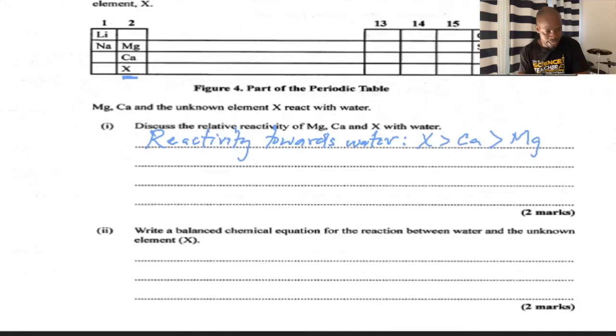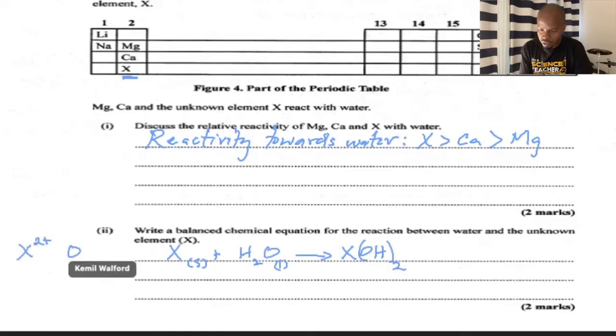Write a balanced chemical equation for the reaction between water and the unknown element X. They're all in the same group, so if you know the reaction for one of them with water, you know the reaction for all of them. We write X as a solid reacting with water, which is a liquid. This gives us the hydroxide. X is in group two, so X2+, and the hydroxide ion is OH-. We need two of them, so we have X(OH)2.